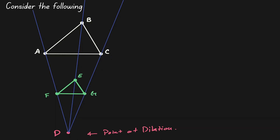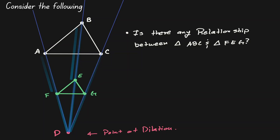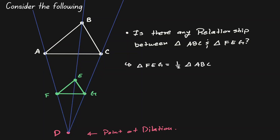Now let's think about the relationship between these two triangles. We started by looking at the distance from A to D and halved it. Then the distance from B to D and halved it. Then the distance from D to C and halved it. So if we cut all those distances by half, we created a new triangle that is also smaller by the same scale factor of one half. In other words, triangle FEG is the result of a dilation on triangle ABC by a scale factor of one half.